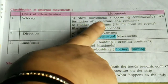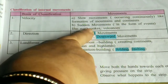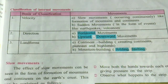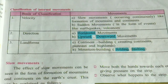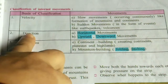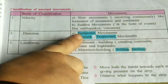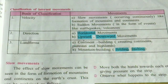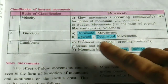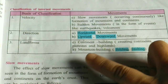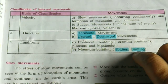Now we will see the earth's movement classification. In terms of velocity: slow movements occur continuously, like the formation of mountains and continents; sudden movements like earthquakes and volcanoes also occur. In terms of direction: horizontal movement and upward-downward movement. In terms of landforms: continent building — creating continents, plateaus and highlands — and mountain building through folding and faulting.